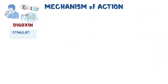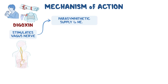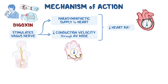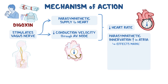Digoxin also stimulates the vagus nerve, which provides the parasympathetic supply to the heart and reduces the conduction velocity through the AV node. These two effects combined result in a decreased heart rate. But because parasympathetic innervation is much richer in the atria, these effects mainly involve the atria.